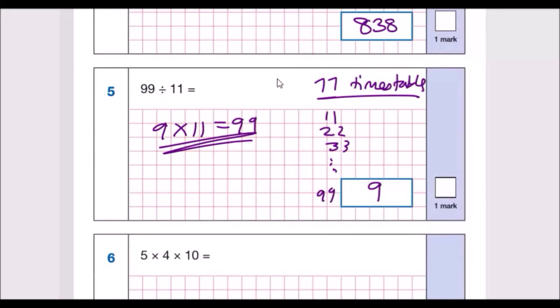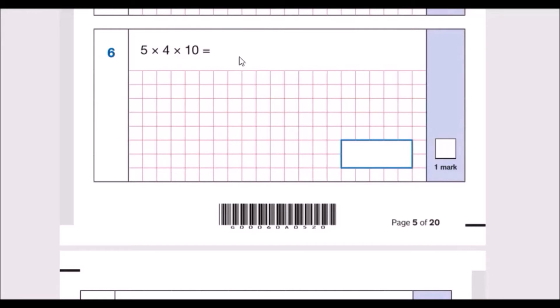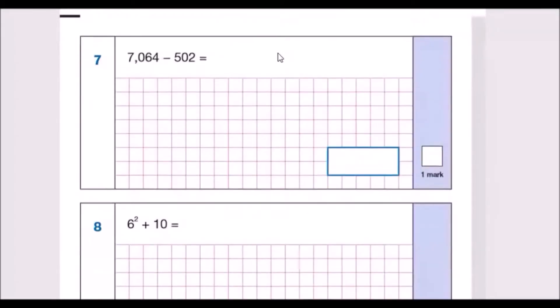Question 6: 5 times 4 times 10. The trick is, do 5 times 4 first which is 20. Anything times 10, you add an extra 0, so it'd be 200. Easy question.